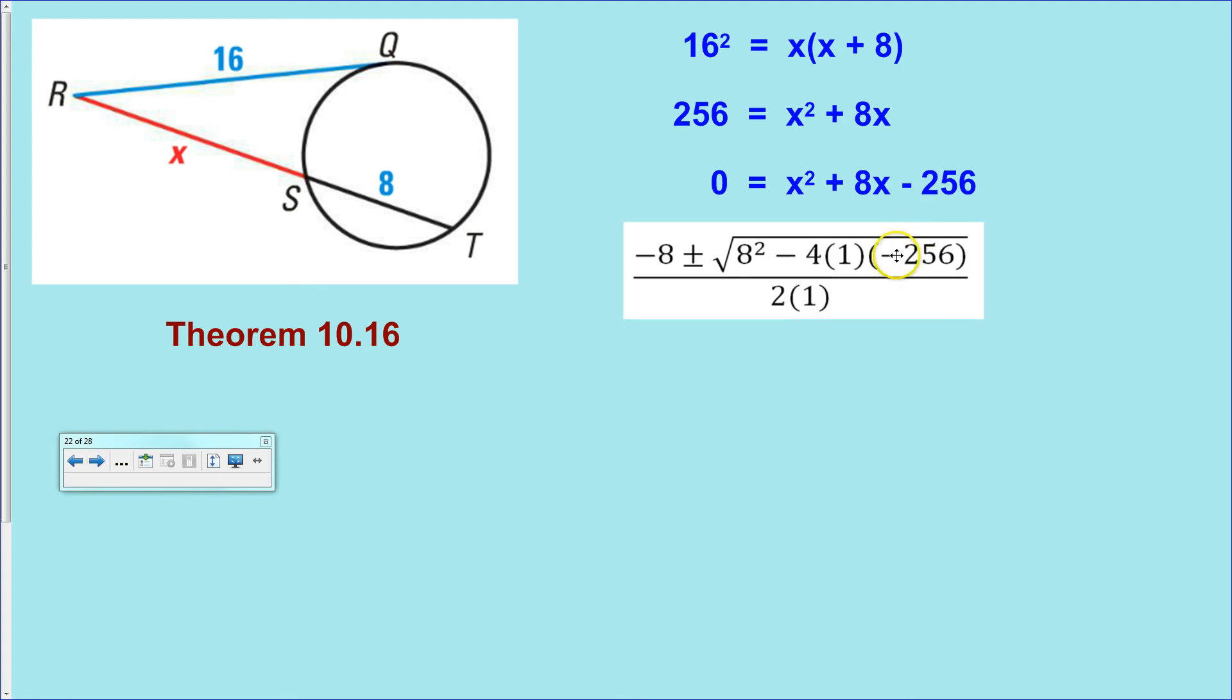Remember, that's called the discriminant. Simplify. Under the root, you'll get 1,088.